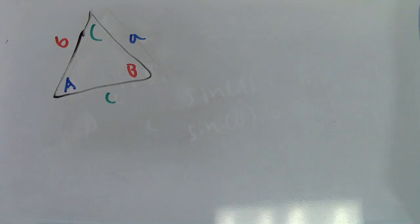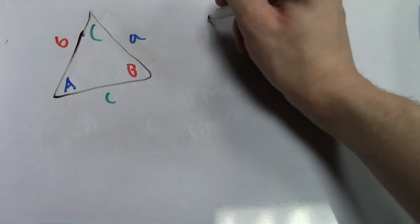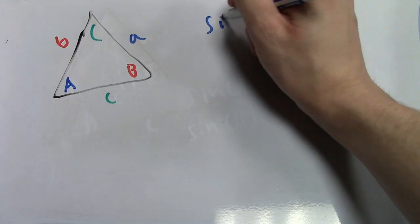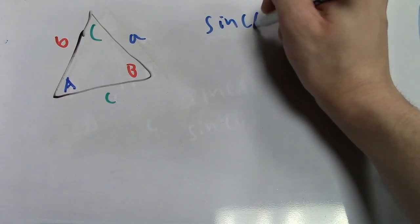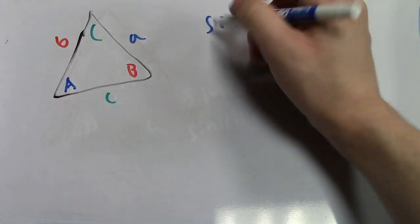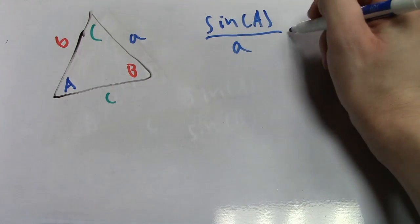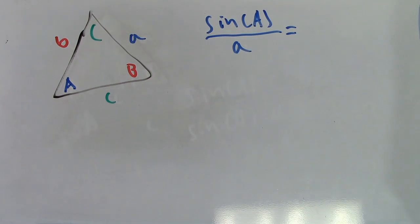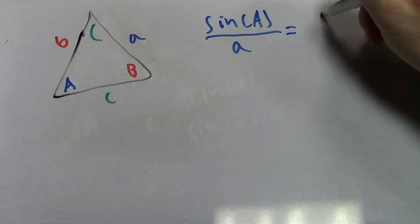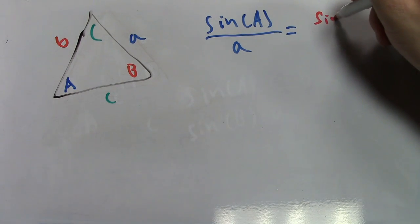I'll start with Law of Sines. Law of Sines states that the sine of angle A over side A is equal to the sine of angle B over side B.